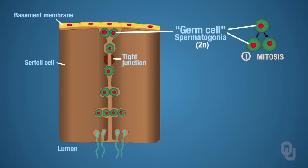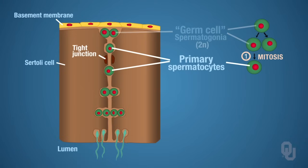After they undergo mitosis, the spermatogonia are going to develop into primary spermatocytes, and they do that by undergoing mitosis. Those primary spermatocytes are also diploid, because whenever a cell undergoes mitosis, the cells derived from that are identical. So these have to be diploid cells.